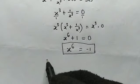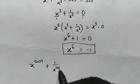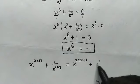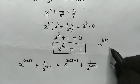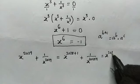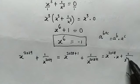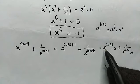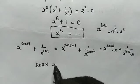Now let's go back to the expression we're asked to evaluate: x to the power of 2029 plus 1 over x to the power of 2029. We can rewrite this as x to the power of 2028 times x, plus 1 all over x to the power of 2028 times x. Our major goal now is to find x to the power of 2028, and fortunately 2028 is a multiple of 6.